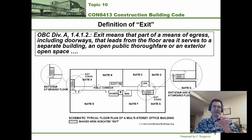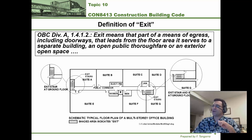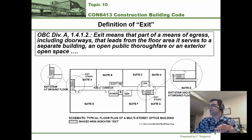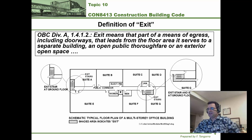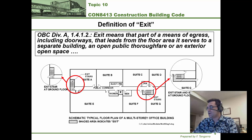The definition is shown on screen and also referred to in the course notes. The word 'exit' in the building code means basically that part of a means of egress, including doorways, that leads from the floor area to a separate part of the building, an open public thoroughfare, or an exterior open space. Basically, in this floor plan on screen — also reproduced in your course notes — the exits are the exit stairways.